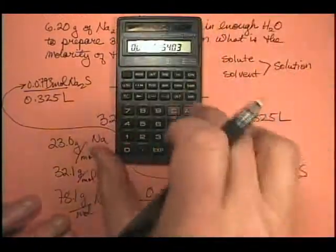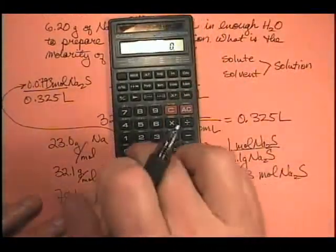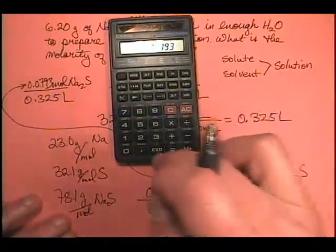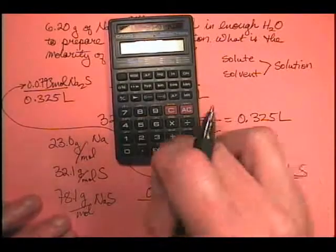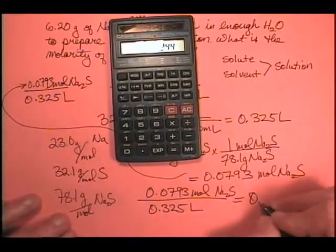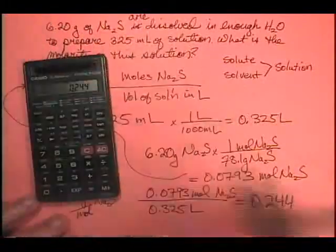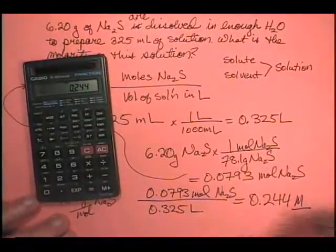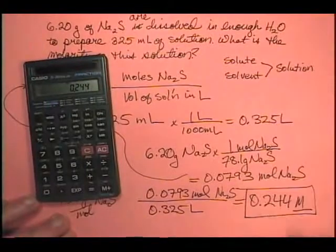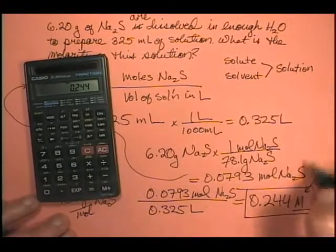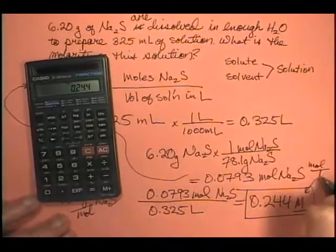So let's go ahead and calculate that. 0.0793 divided by 0.325 equals 0.244, we're good to 3 sig figs molar. Remember, this M is moles per liter.